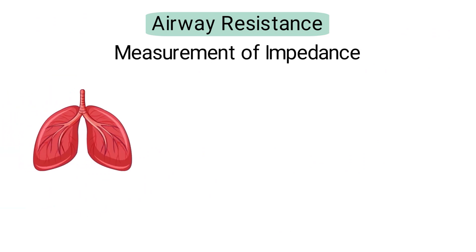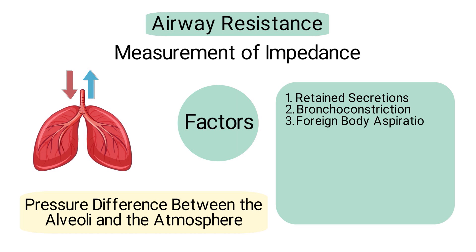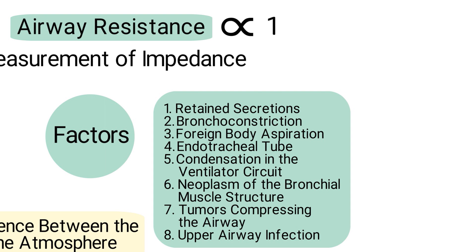Next up is airway resistance. Airway resistance is a measurement of impedance to the movement of air through the respiratory tract during inspiration and expiration. Factors that can affect airway resistance include retained secretions, bronchoconstriction, foreign body aspiration, an endotracheal tube, condensation in the ventilator circuit, neoplasm of the bronchial muscle structure, tumors compressing the airway, and an upper airway infection. The airway resistance is inversely proportional to the cross-sectional area of the airway, meaning that a smaller airway has greater resistance than a larger airway.